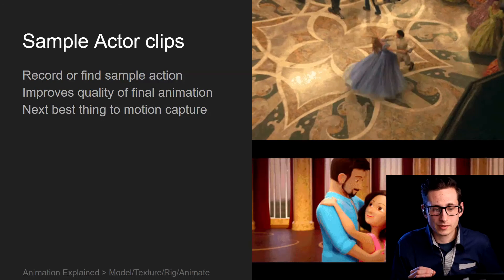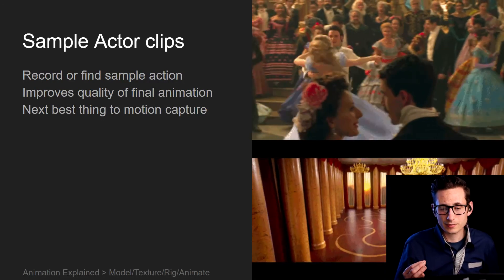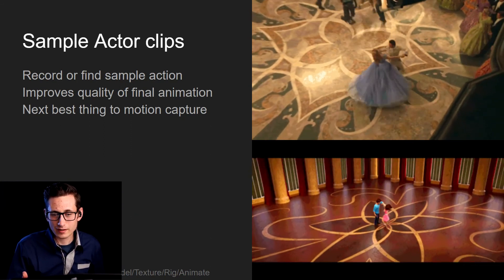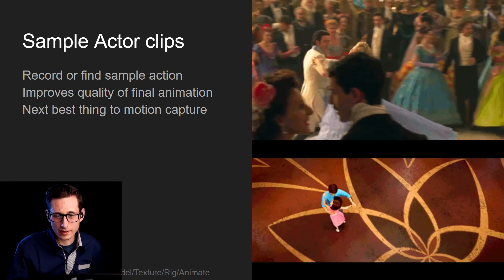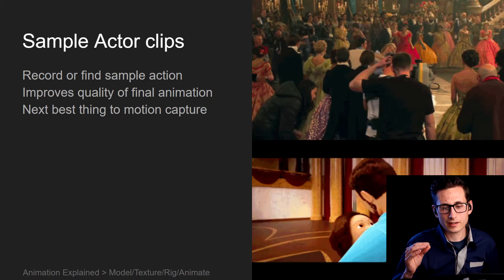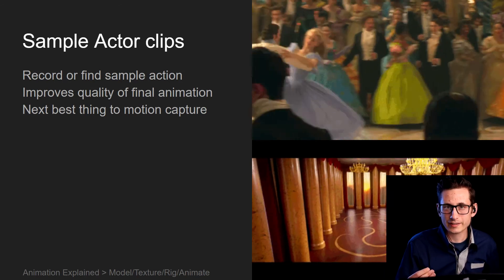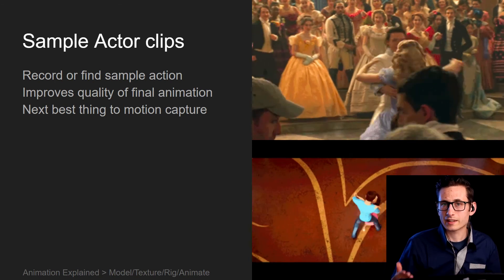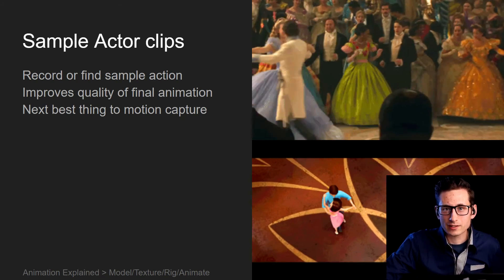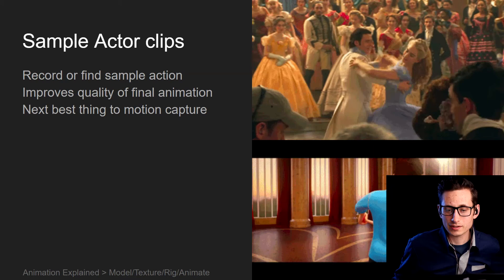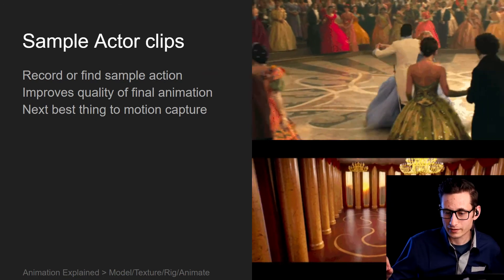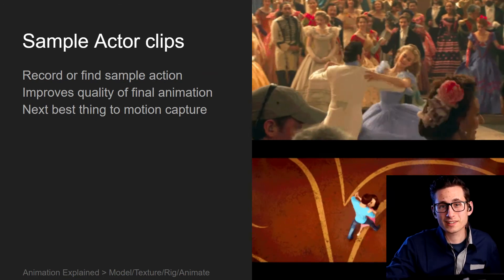Something super important we found when creating animation is to record or find sample actor clips. You either record yourself reenacting the shot you're animating or find someone else who's done it — here the example is the dance from Cinderella that we used for our father-daughter dance scene. That way you've got realistic motion to work off of as you're animating. So often you've got something in your head, you start to animate your characters, and you realize it looks nothing like it actually looks. Motion capture is also a big thing nowadays, but on our budget that's not really an option.